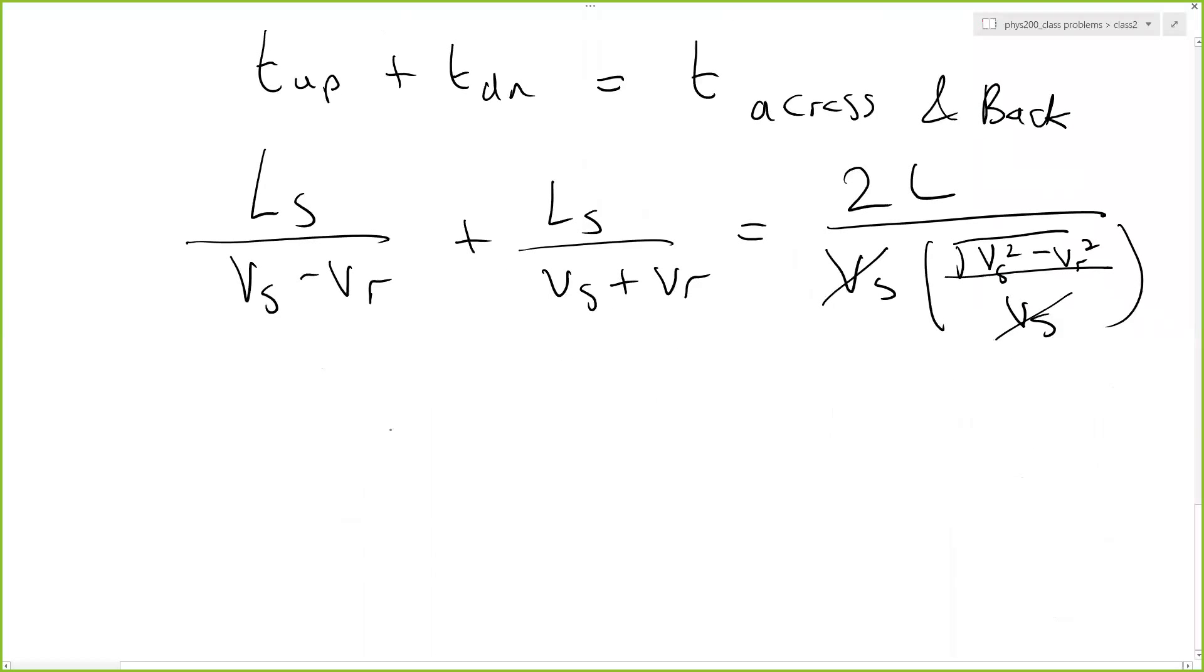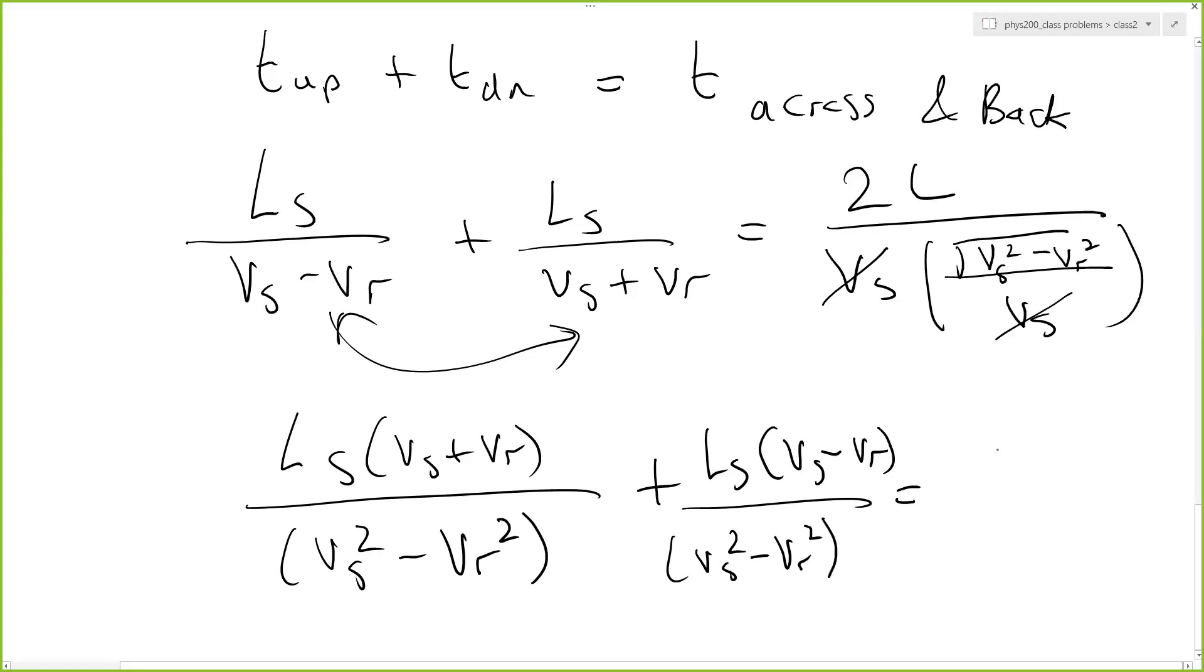And we are going to have something that looks like Ls into Vs plus Vr divided by the product of these two things. I'm just putting the fractions. So that's Vs squared minus Vr squared, difference of two squares.